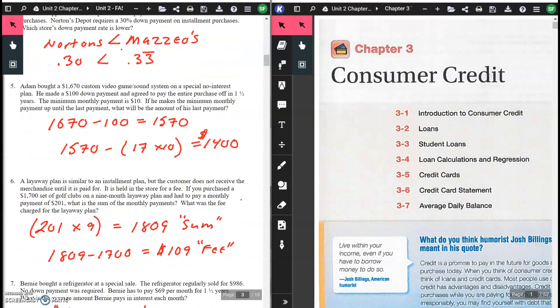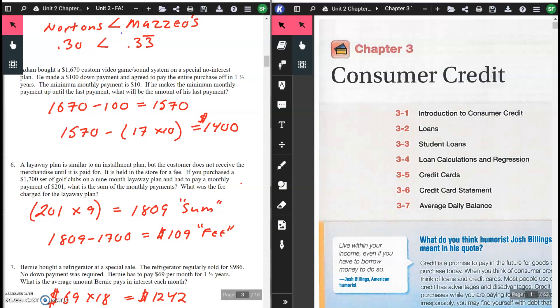Number five: Adam bought a $1,670 custom video game sound system on a special no interest plan. He made a down payment of $100 and agreed to pay the entire purchase off in one and a half years. The minimum monthly payment is $10. If he makes the minimum monthly payment up until the last payment, what will the amount of his last payment be? $1,670 minus the $100 down payment gives you $1,570. He owes $1,570 for that sound system.